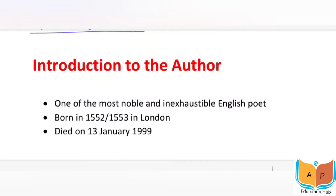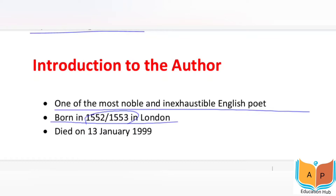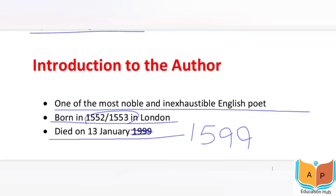Edmund Spencer was one of the most noble and inexhaustible English poets. His birth year is either 1552 or 1553 in London — the exact year is not confirmed, which is why critics mention both years. His father was a cloth maker and his mother's name was Elizabeth, about whom we don't have much information. His early education took place in London, and he died on 13 January 1599.